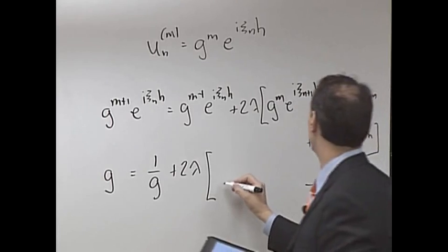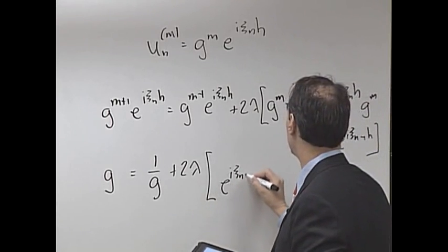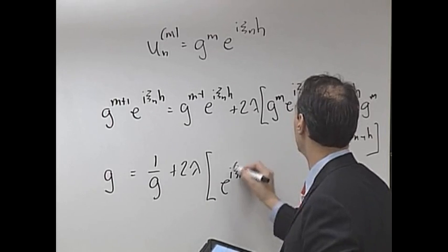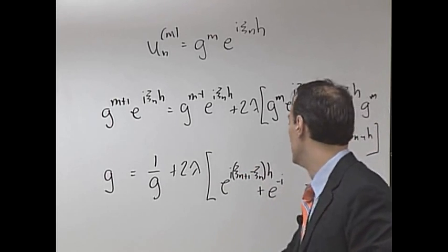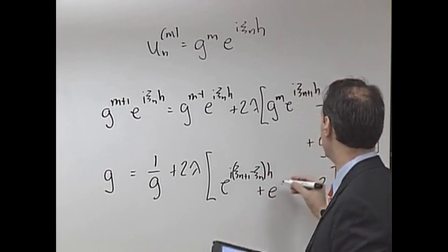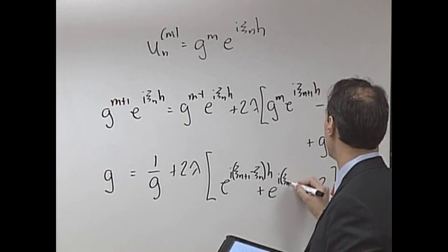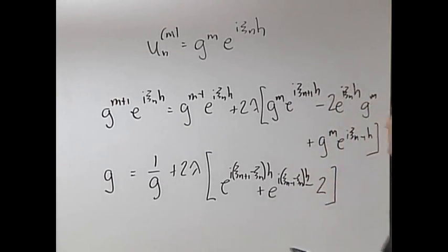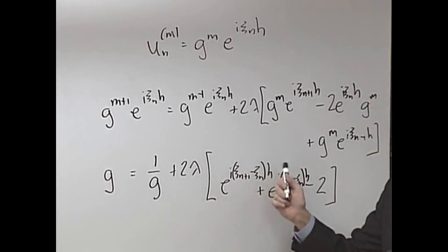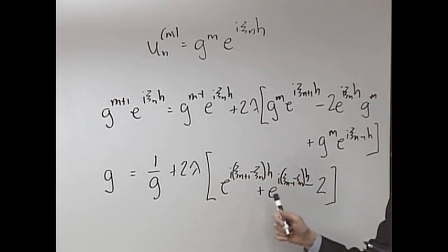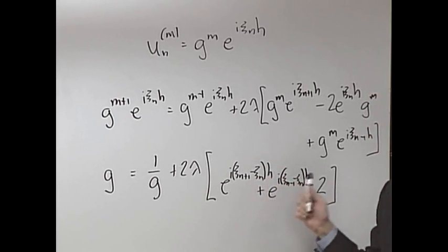Here you get e to the i c of n plus 1 minus c of n, h, plus e to the minus i... oh, sorry... e to the i c of n minus 1 minus c of n, h. And if we use our trick again, where we say c of n is equal to n times zeta, then I have these become e to the i zeta h plus e to the minus i zeta h.